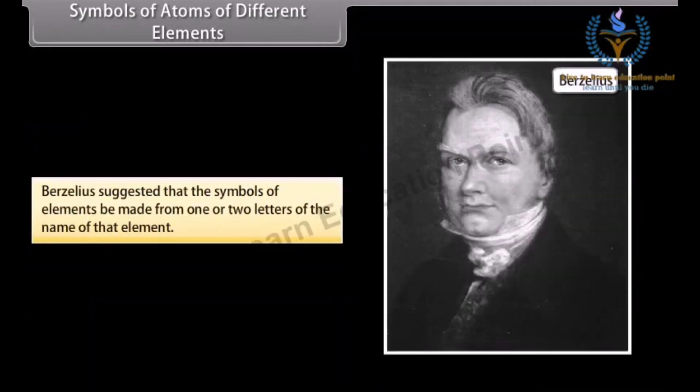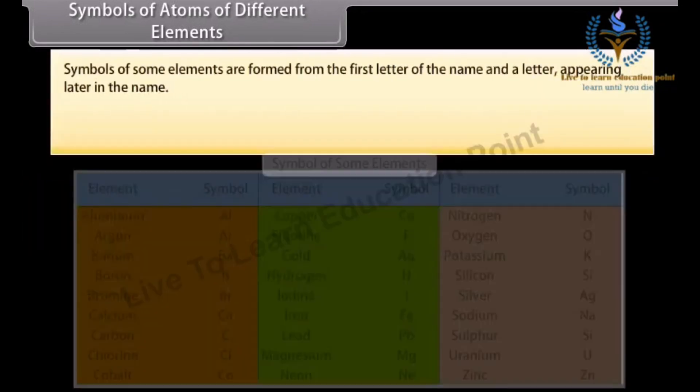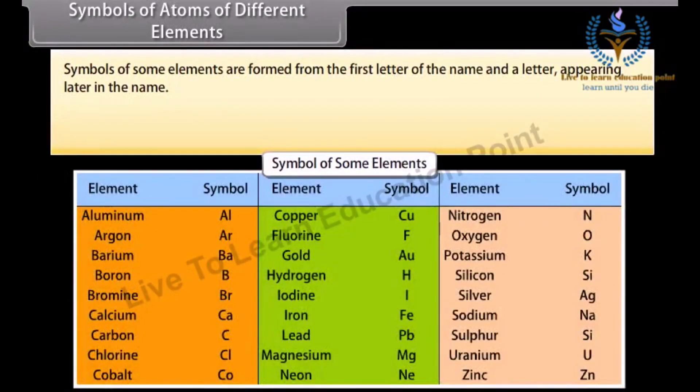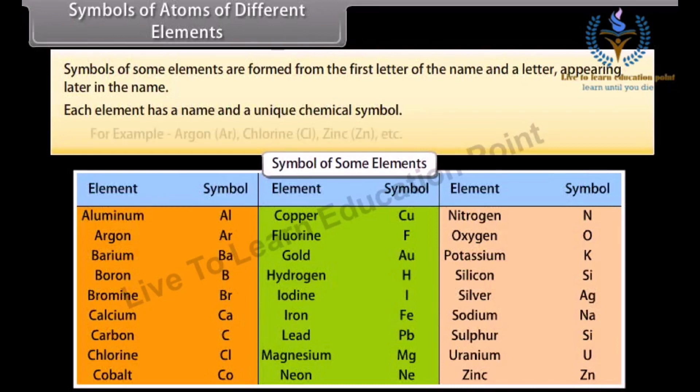Berzelius suggested that the symbols of elements be made from one or two letters of the name of that element. Symbols of some elements are formed from the first letter of the name and the letter appearing later in the name. Each element has a name and a unique chemical symbol, for example: Argon Ar, chlorine Cl, zinc Zn, etc.